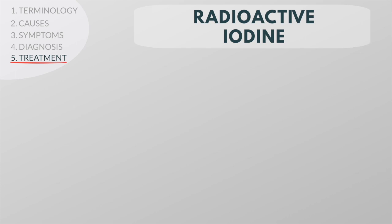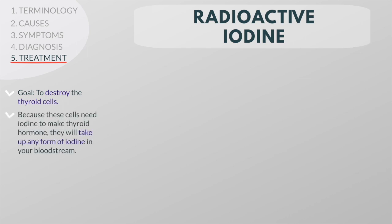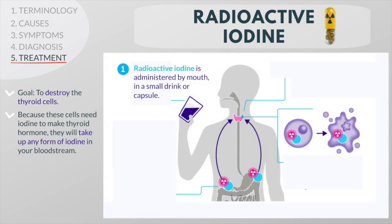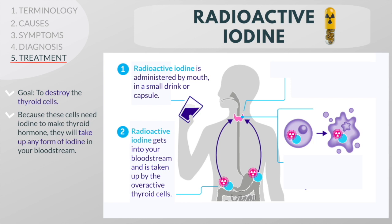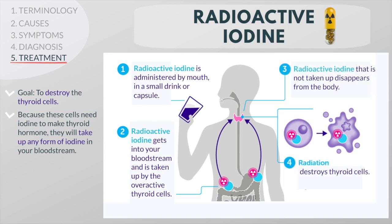Another way to treat hyperthyroidism is to damage or destroy the thyroid cells. Because these cells need iodine to make thyroid hormone, they will take up any form of iodine in your bloodstream, whether it is radioactive or not. The radioactive iodine is administered by mouth, usually in a small drink or capsule, taken just once. Once swallowed, it gets into your bloodstream and is quickly taken up by the overactive thyroid cells, destroying them. The result is that the thyroid or thyroid nodules shrink in size and thyroid hormone levels return to normal. Sometimes patients remain hyperthyroid but usually to a lesser degree, and a second radioiodine treatment can be given if needed.